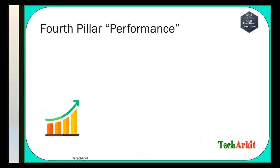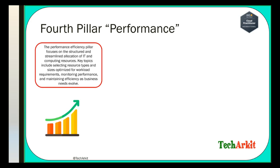The fourth pillar is Performance. The Performance Efficiency pillar focuses on the structured and streamlined allocation of IT and computing services. Key topics include selecting resource types and sizing optimized for workload requirements. The main focus is selecting the appropriate workload — for example, if you require five terabytes of storage but select only four terabytes, capacity won't be sufficient and you'll have performance issues.